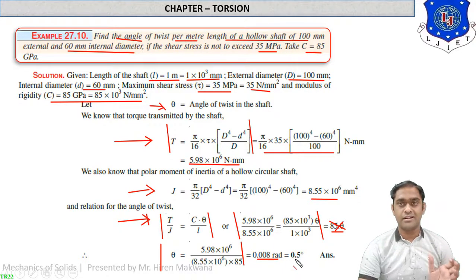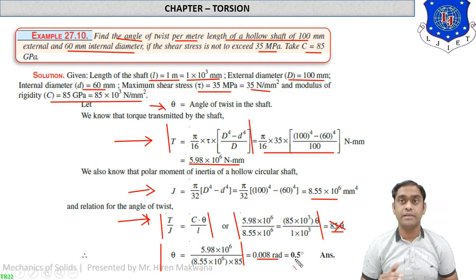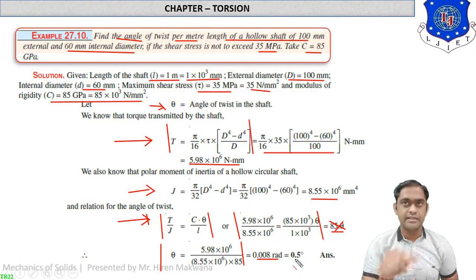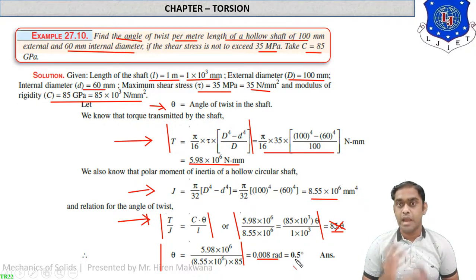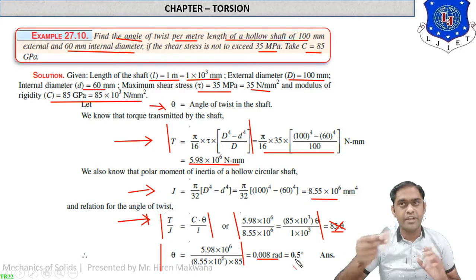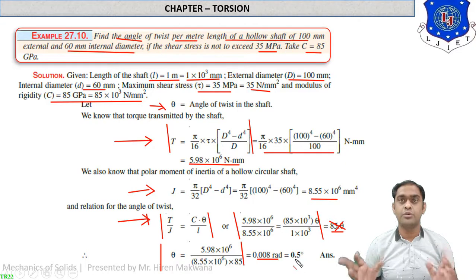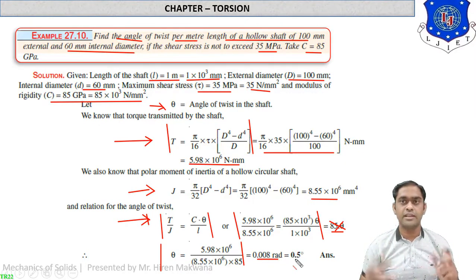To convert radians to degrees, multiply by 180/π. So θ = 0.008 × 180/π = 0.5 degrees. This shows that under a shear stress of 35 MPa, the shaft twists by only 0.5 degrees — demonstrating that shafts are subjected to only slight amounts of twisting and do not fail under normal operating conditions.